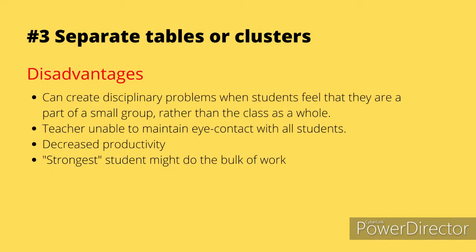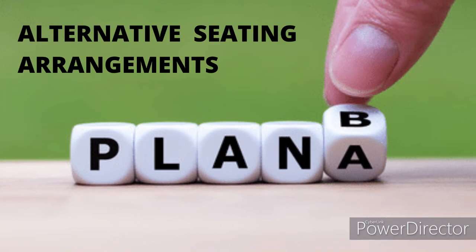On the other hand, the disadvantages are: it can create disciplinary problems when students feel that they are part of a small group rather than the whole class, the teacher is unable to maintain eye contact with all students, there is decreased productivity, and the strongest student might do the bulk of the work. Those are the three most popular seating arrangements, but we will also cover those that can be alternatives.